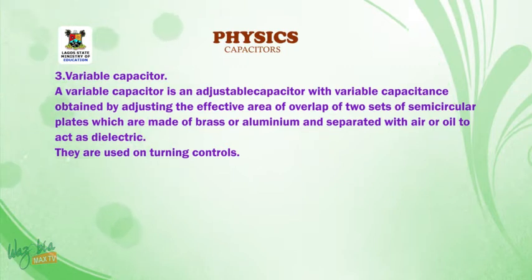Variable capacitor is an adjustable capacitor with variable capacitance obtained by adjusting the effective area of overlap of two sets of semicircular plates, which are made of brass or aluminum, and separated with air or oil to act as dielectric. They are used on tuning controls.